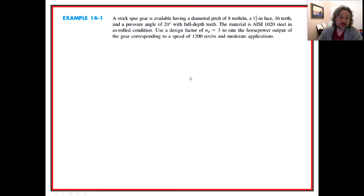Let's take a look here. What the problem is asking for is a stock spur gear is available having a diametral pitch of 8 teeth per inch, 1.5 inch face width, 16 teeth, and a pressure angle of 20 degrees with full depth teeth. The material is AISI 1020 steel in as-rolled condition. Use a design factor of 3 to rate the horsepower output of the gear corresponding to a speed of 1200 RPM with moderate applications.